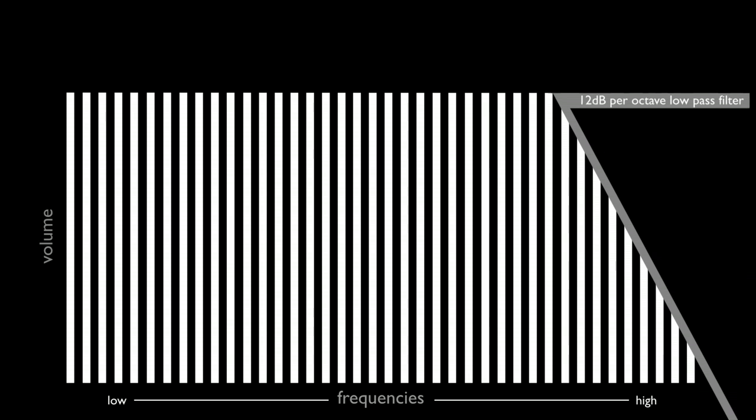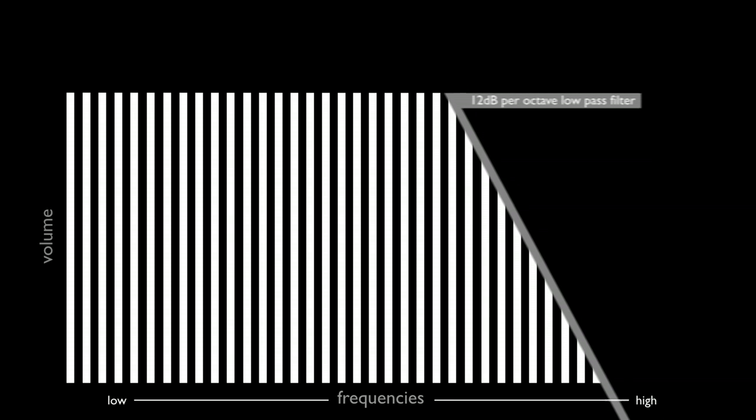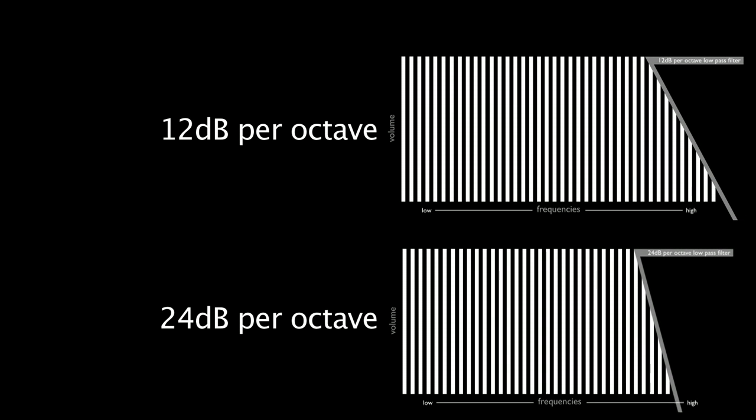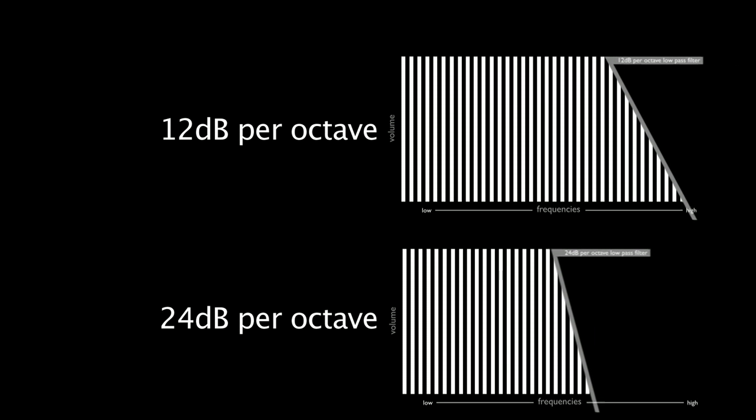12 decibels per octave is a more gentle slope, allowing more of the attenuated frequencies to be heard. Compare the angles of the angled bars of the 24 decibel per octave filter and the 12 decibel per octave filter, and you'll see what I mean.